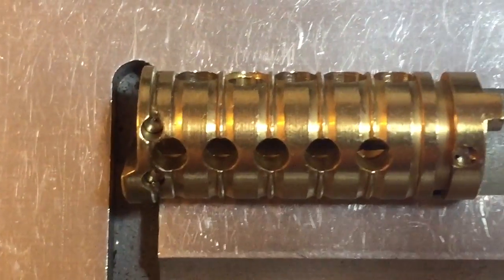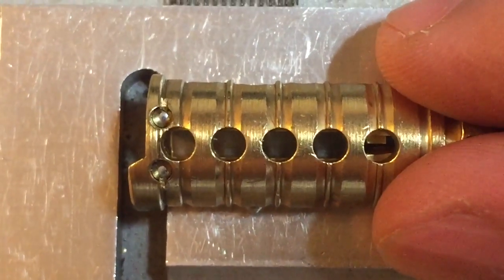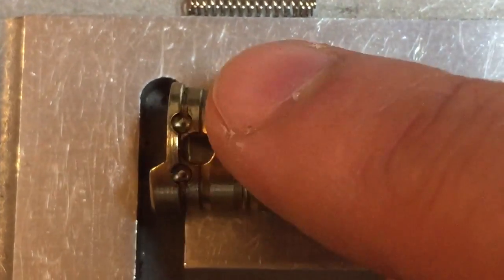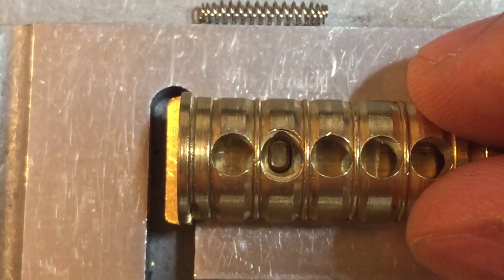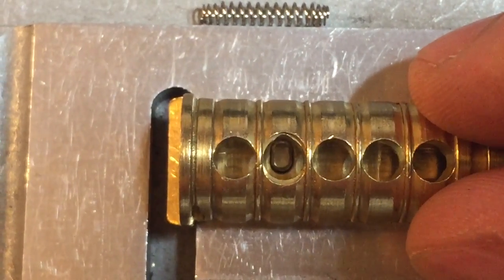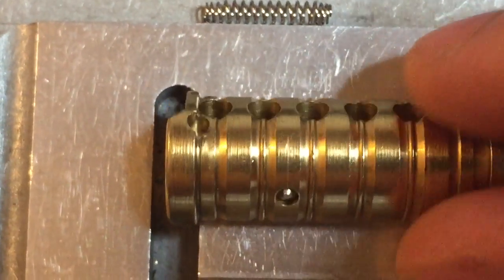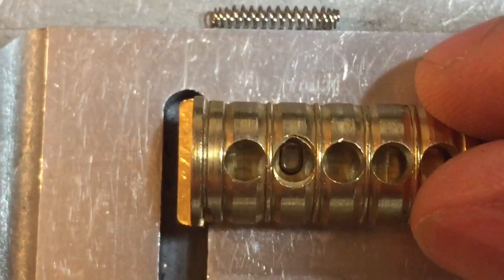Moving over to the core, we can see a couple of interesting features. First you see some drill protection above and below the keyway right here - two hardened inserts. Then moving over, you can see the little pin in the bottom of chamber number two. That is the pin that lifts up the interactive element on the key and makes the whole system operate.